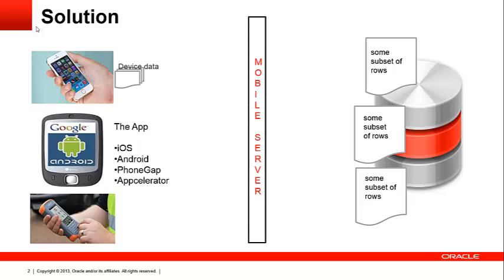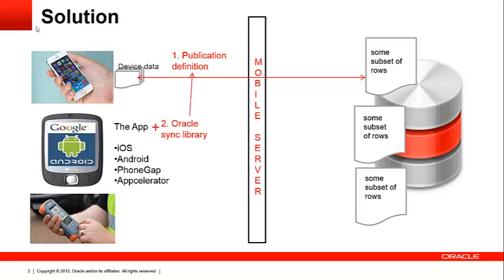Let's explore the steps required to set up the synchronization for offline data access on mobile devices. The solution is Oracle Database Mobile Server. The first step in this process is to create publications of the data so that the data is accessible to the mobile devices. The second step is to add Oracle Sync Library to the application on the mobile device.